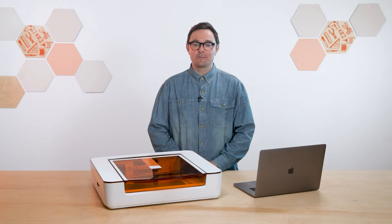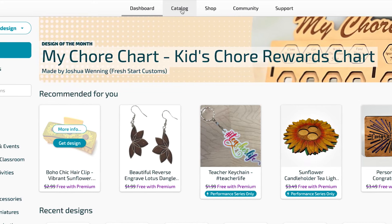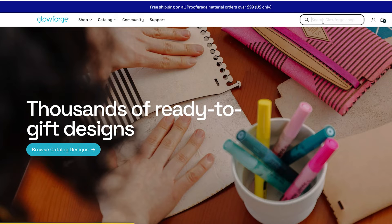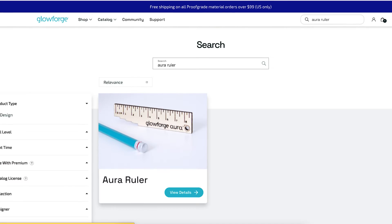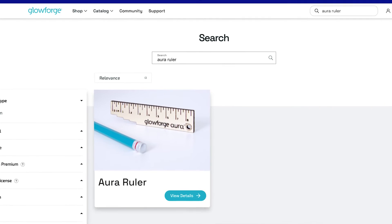We're going to start with a favorite design from the catalog and to find it just click the word catalog at the top of the screen. Now from here we can browse through thousands of designs but we already know what we're looking for, so in the search box in the upper right type Aura Ruler. Here's the design we're going to be working with.